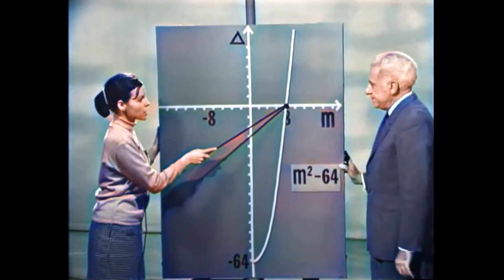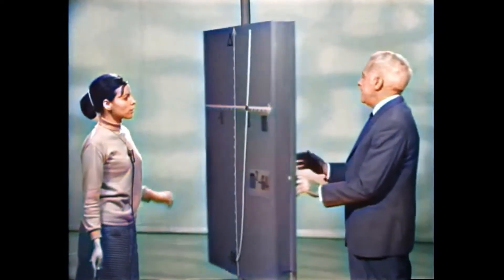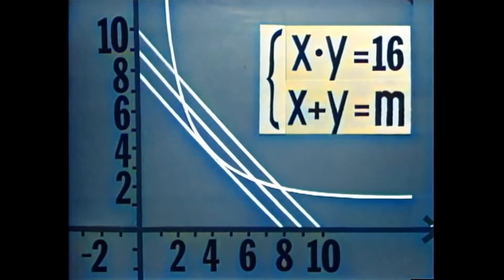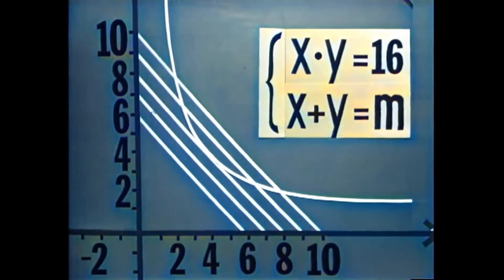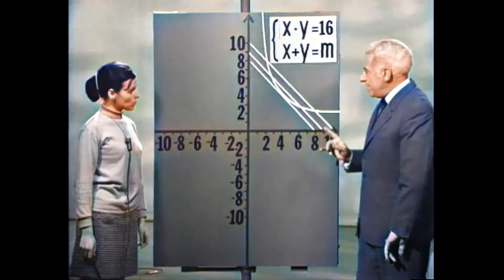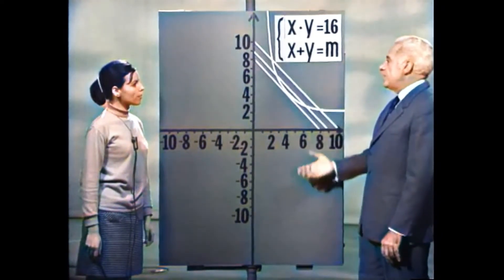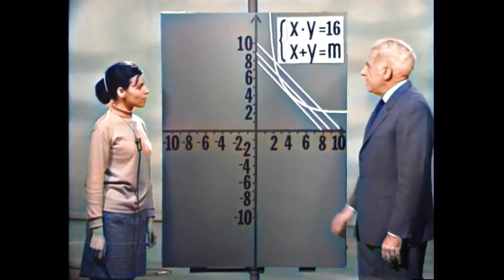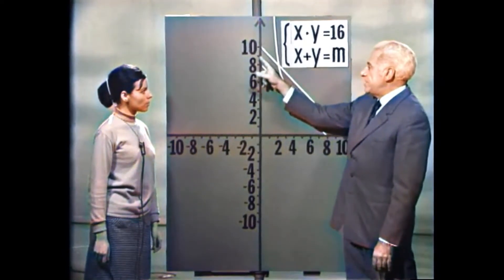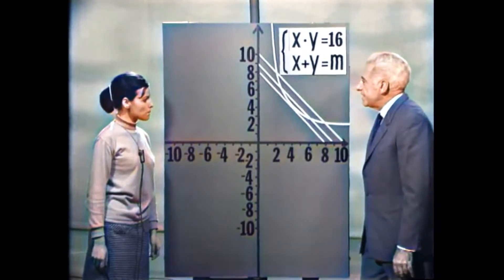כאשר M שווה 8, יש פתרון אחד למערכת. אם ממשיכים להזיז את הישר כלפי מטה, הישר אינו חותך את ההיפרבולה — אין פתרונות. כלומר, ההיקף הקטן ביותר האפשרי מתקבל כאשר M שווה ל-8: היקף 16 מטר. לעומת זאת, M שווה 9 נותן היקף 18, ו-M שווה 10 נותן היקף 20.